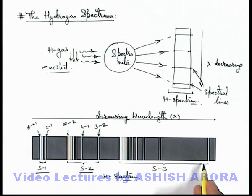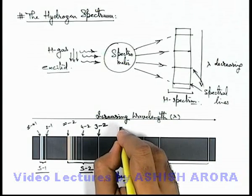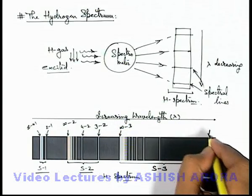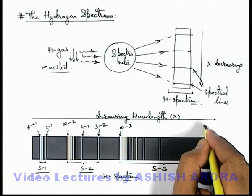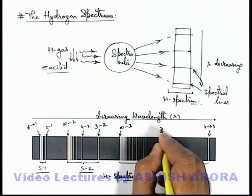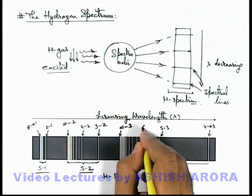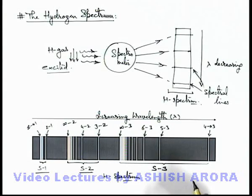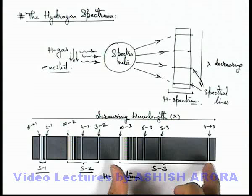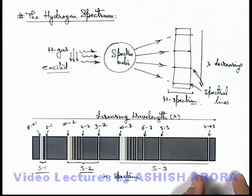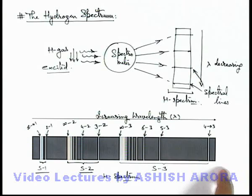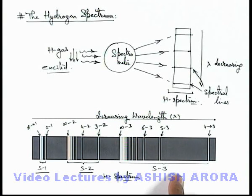Similarly, another spectral series is obtained for the transition corresponding to infinity to n=3, with lines corresponding to transitions from 4 to 3, 5 to 3, 6 to 3, and so on. Further, there are other higher spectral series as well. As we move further, the width of each spectral series is increasing, so the next spectral series overlaps with the previous one — that is why those series have not been drawn here. In the coming section, we are going to discuss in detail about these spectral series and the specific names given to them.